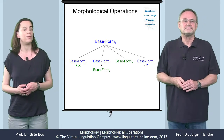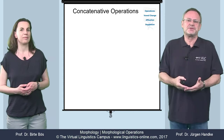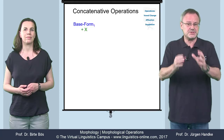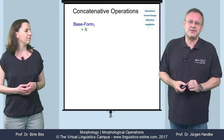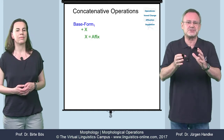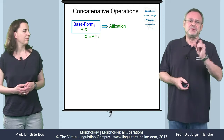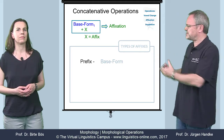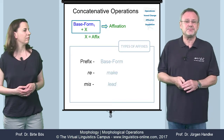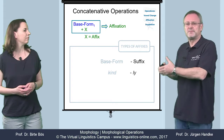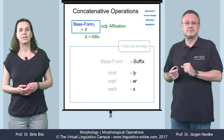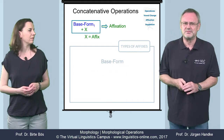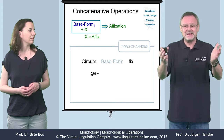Let's look at concatenative operations first. Perhaps the simplest and most direct means by which a language can mark a category is by the addition of some material to a base form. The material that is added is referred to as an affix, and the operation is called affixation. Depending on their position in relation to the base, affixes are called prefixes, as in 're-make' or 'mislead'; suffixes, as in 'kindly,' 'waiter,' or 'walks'; infixes, as in the highly expressive example 'canger-bloody-roo'; or circumfixes, as in German 'ge-liegt.'